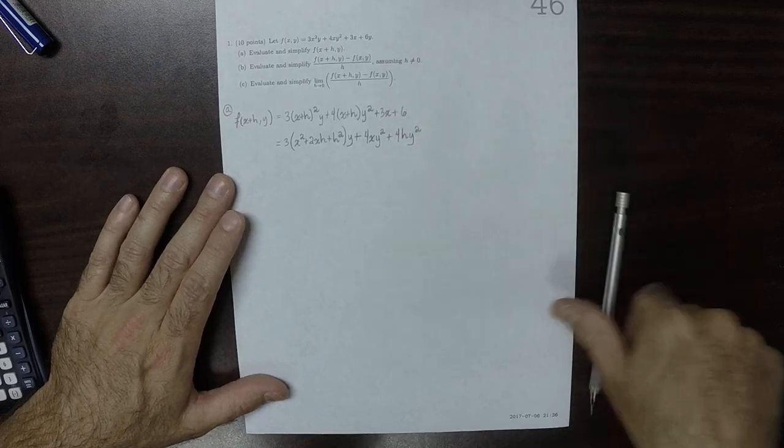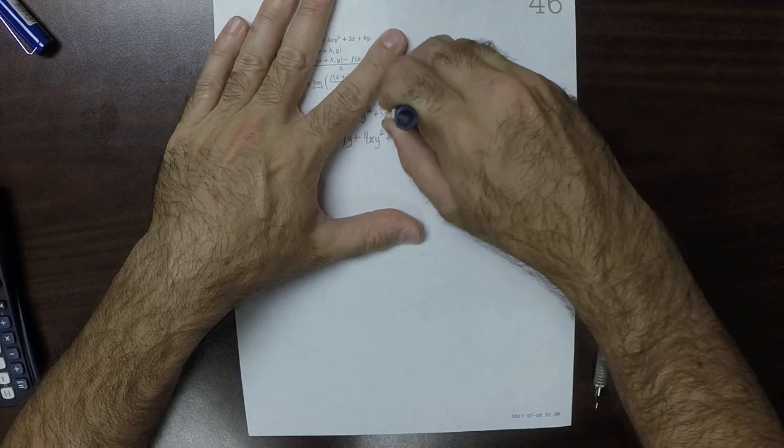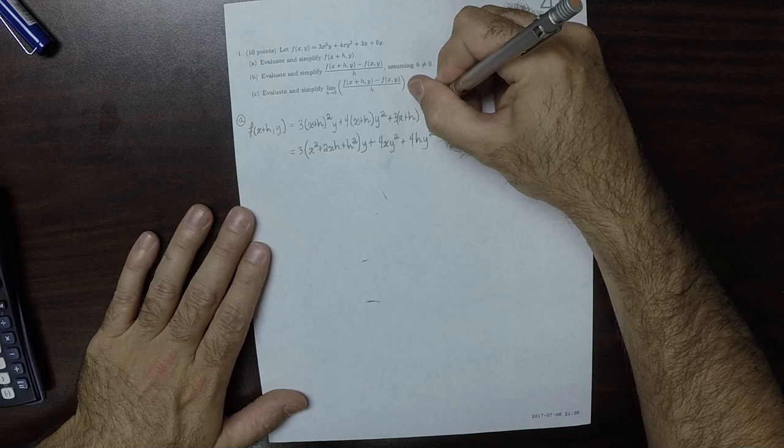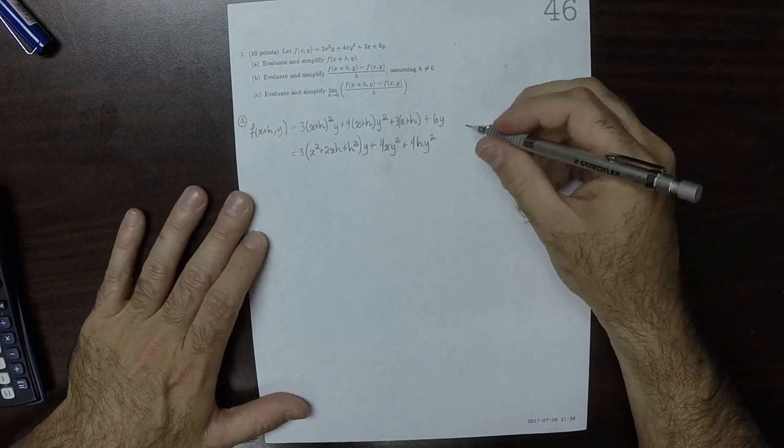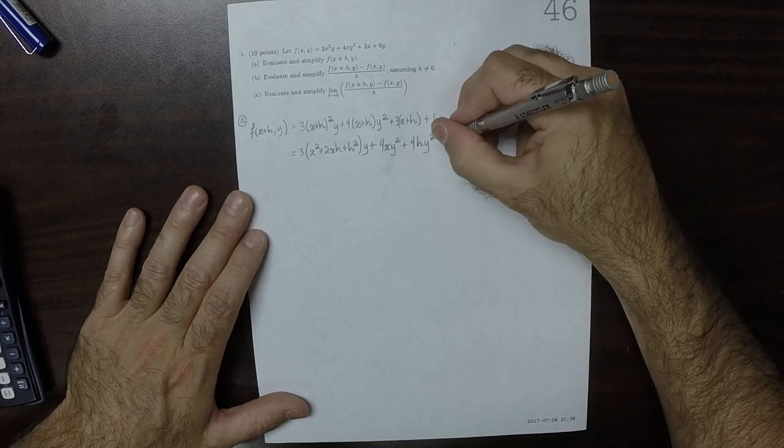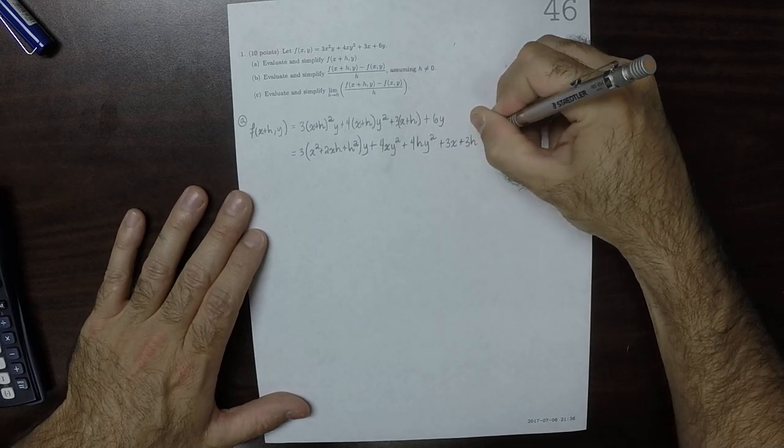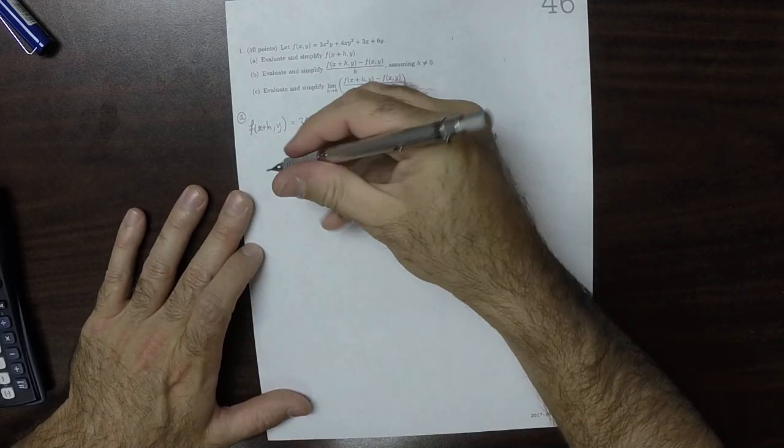That should be x plus h plus 6y. So that should be 3x plus 3h plus 6y. Okay, then multiply that out.